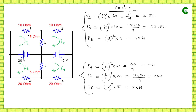For P1, the power dissipation across the first resistor: the current through it is i1 = 0.5 A. So P1 = (0.5)² × 10 = 2.5 W.